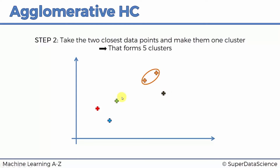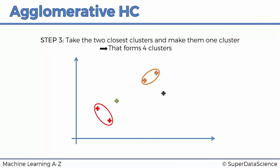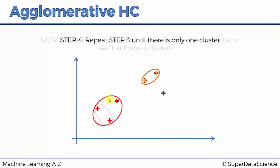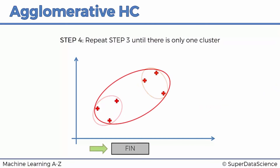Continuing to repeat step three: out of four clusters, the closest are combined — now three clusters. Then the closest two of those three are combined — now two clusters. Finally, those last two clusters are combined into one. Each iteration reduces the cluster count by one until we have a single cluster containing all points.